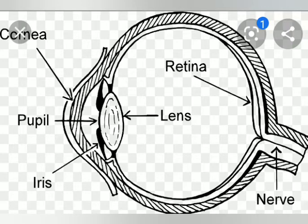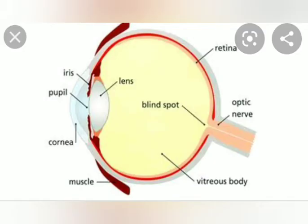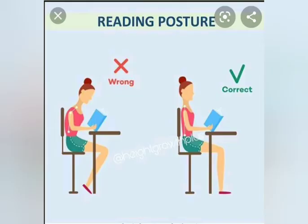Optic nerves: it connects the eyes to the brain. It carries light messages or images to the brain, and our brain tells us what we see. Iris: it is the colored part of the eyes that surrounds the pupil. It controls the size of the pupil, thus managing the amount of light that enters the eye.